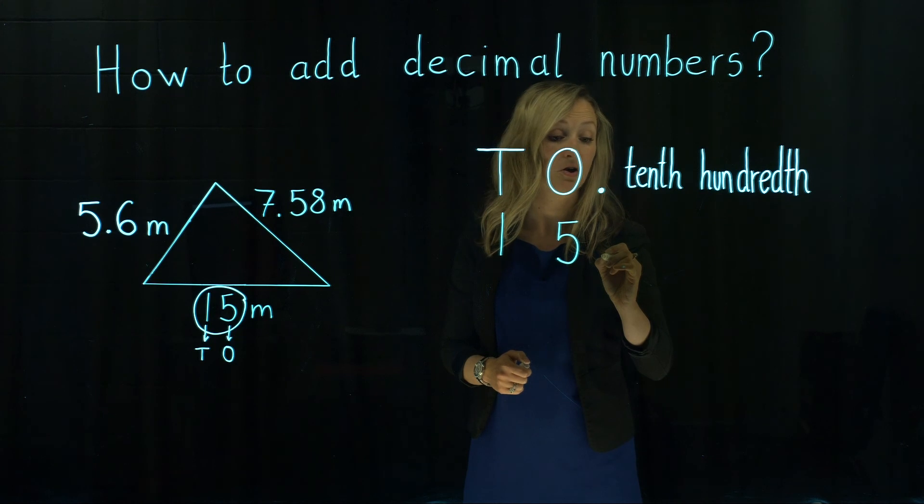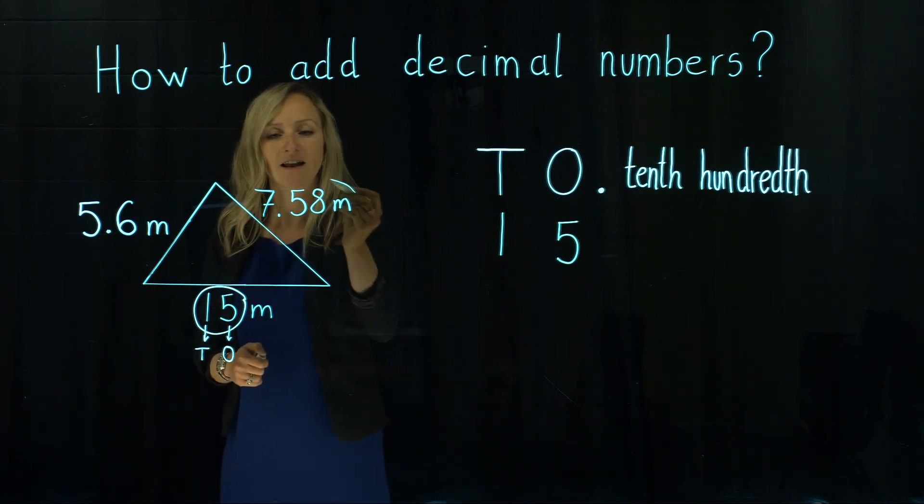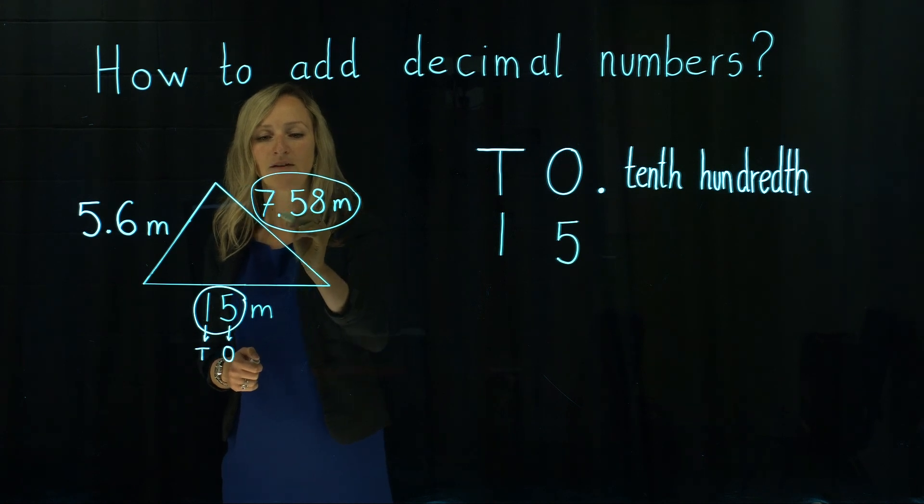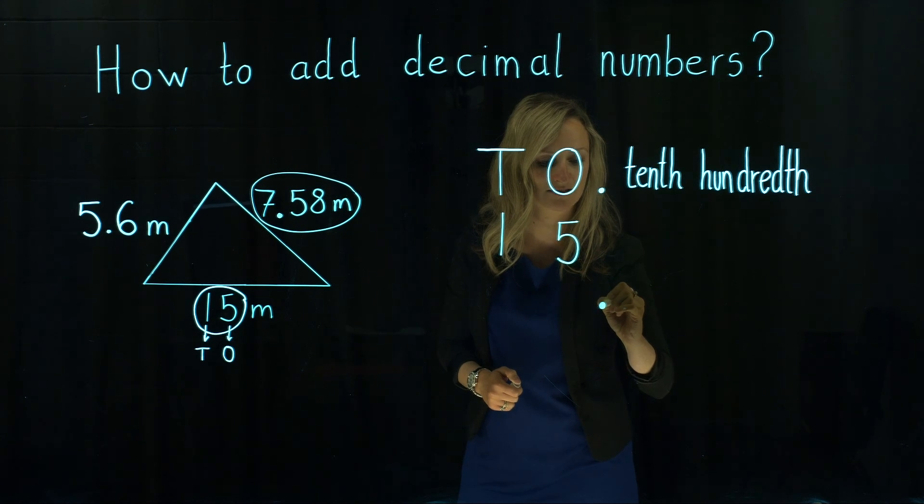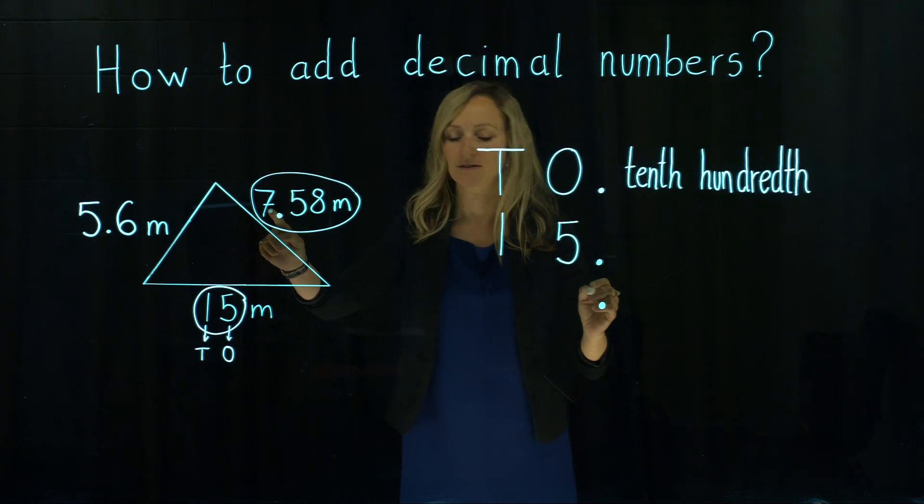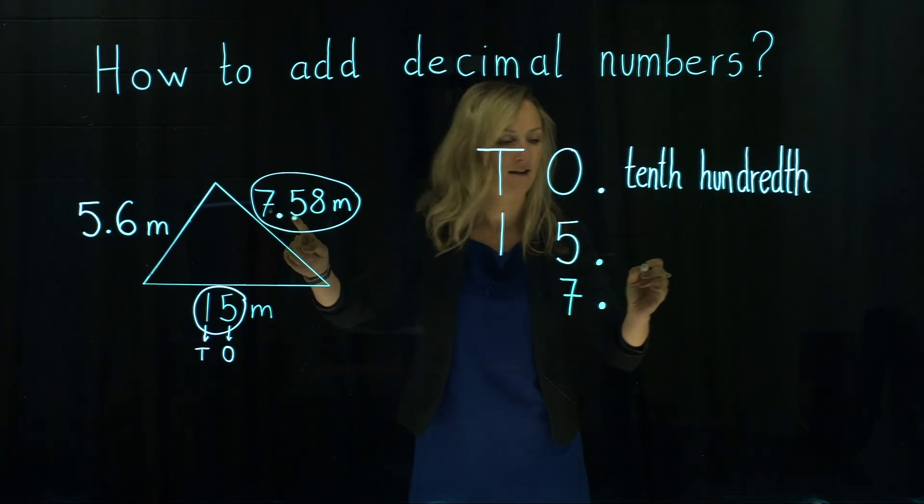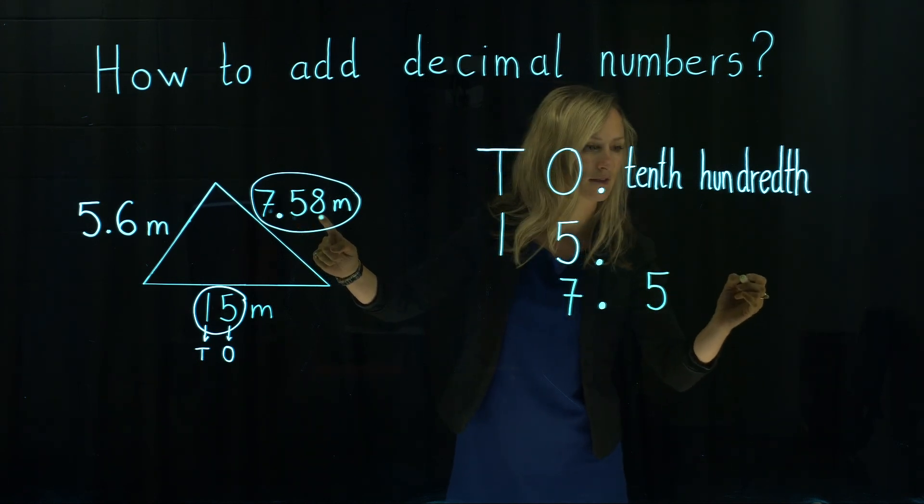Then a decimal point could be at the end of the whole number but in our example we don't need to worry about it. Then let's place this number in a place value table. We have a decimal point here so decimal point should be under the decimal point. Under the decimal point and we've got seven ones and five tenths and eight hundredths.